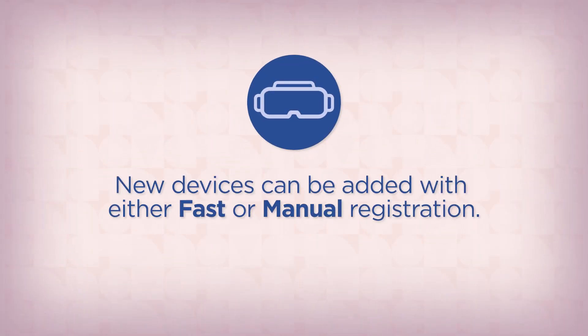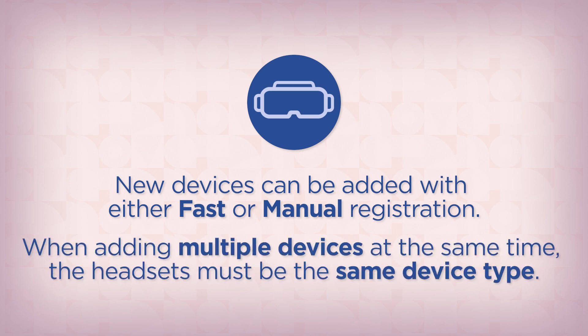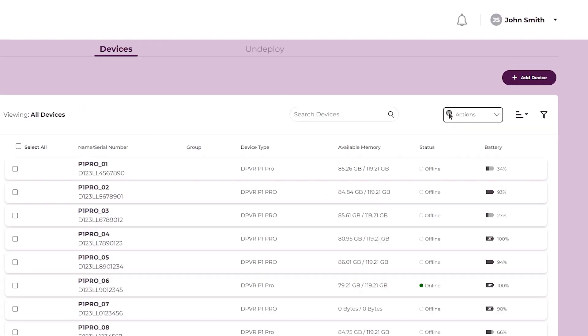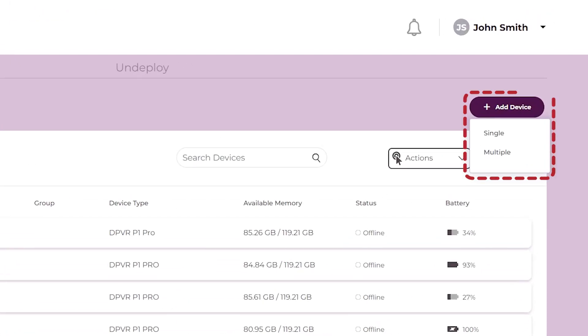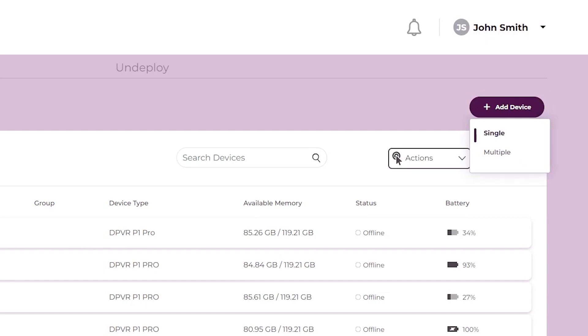New devices can be added to the Immersive Learning Hub with either fast or manual registration. When adding multiple devices at the same time, the headsets must be the same device type. Click the Add Device button and select either Single Device or Multiple Devices.